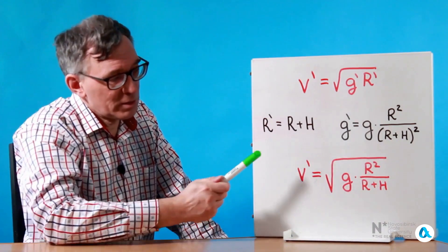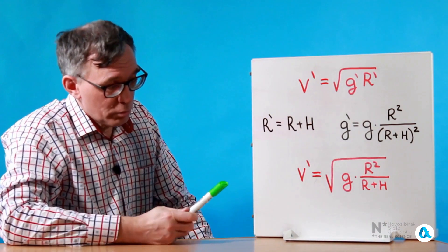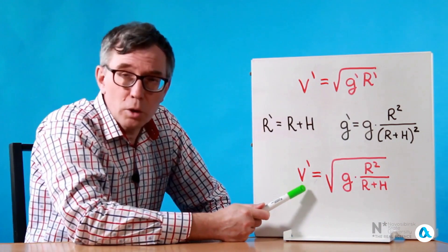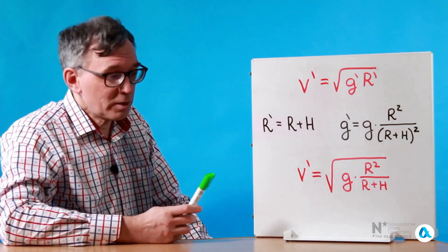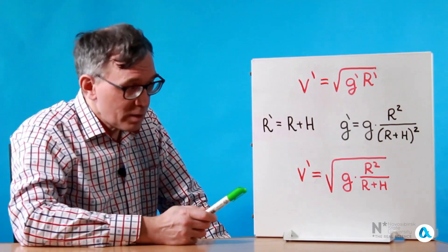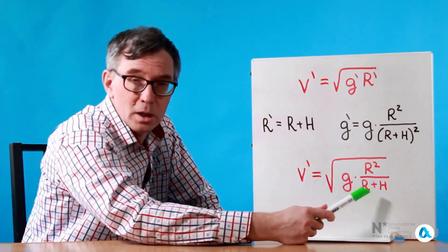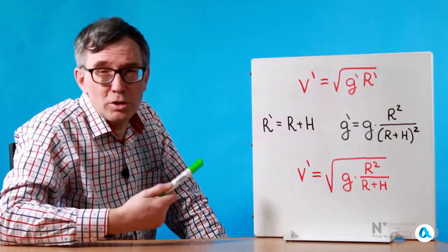And if we simply substitute R and G into this formula, we will ultimately obtain this final result. The orbital speed of a rocket is lesser in magnitude, the higher the orbit of our satellite or any other spacecraft.